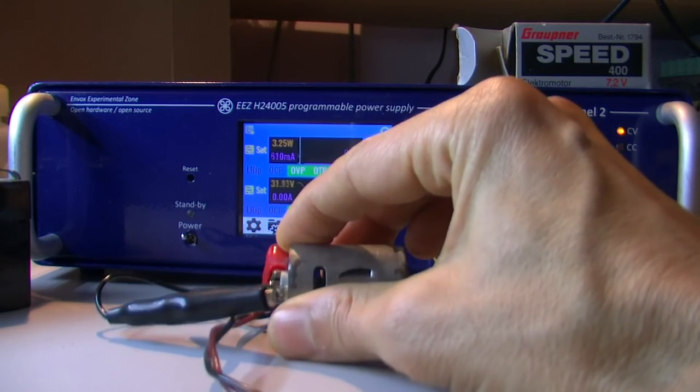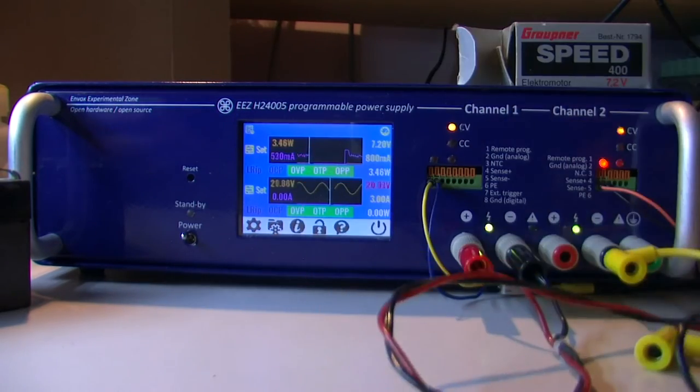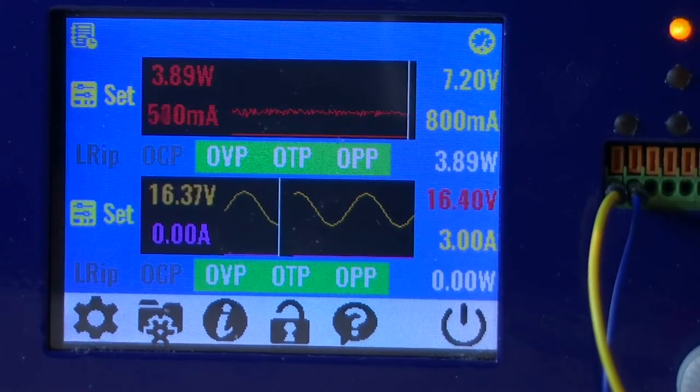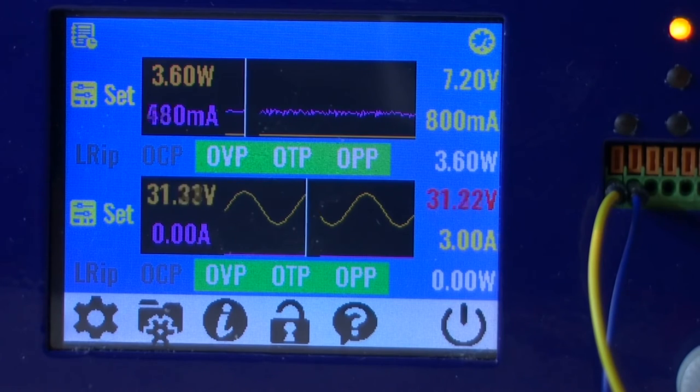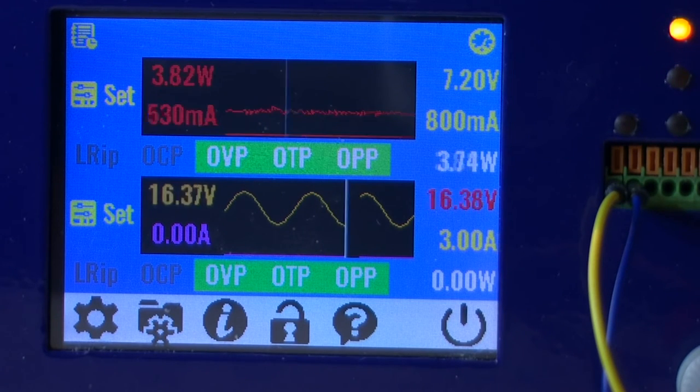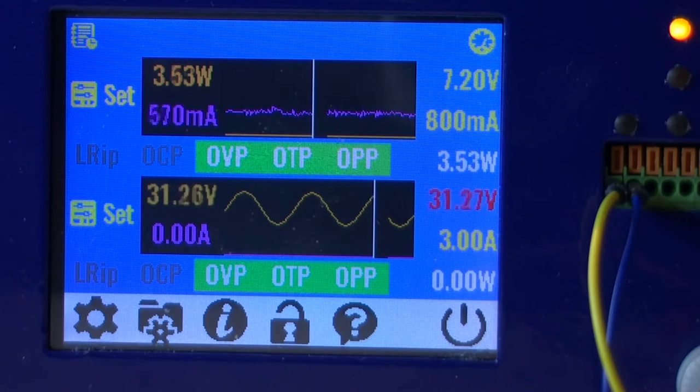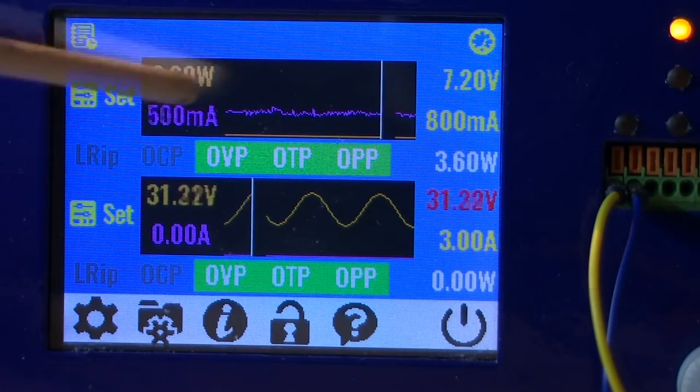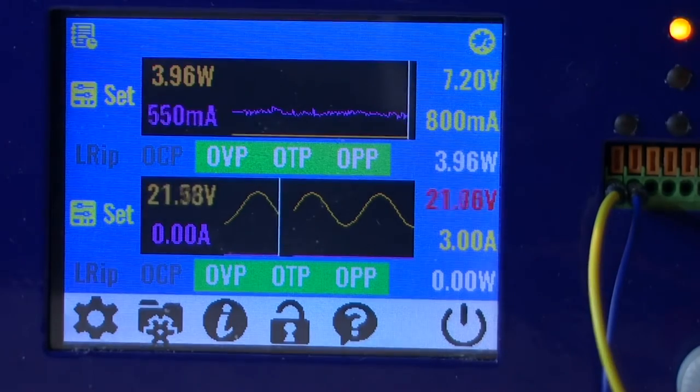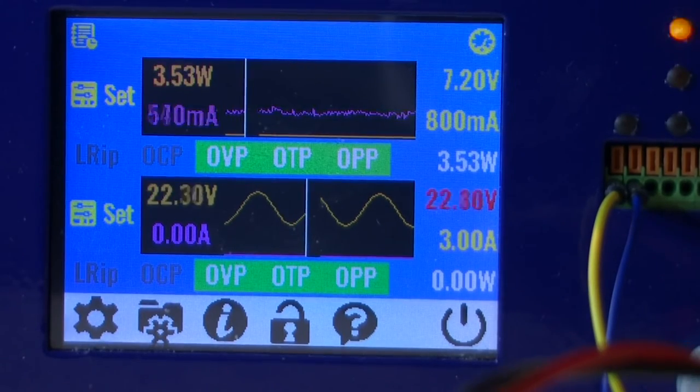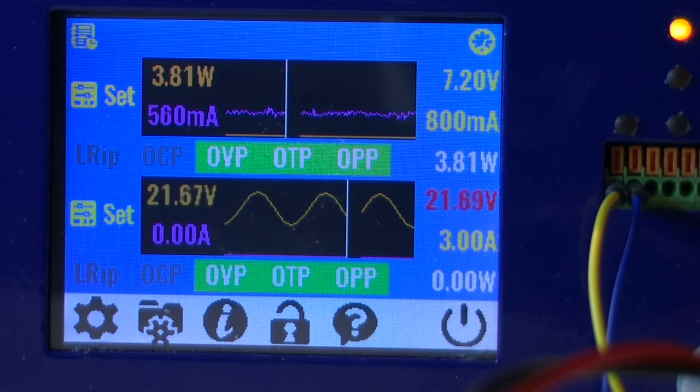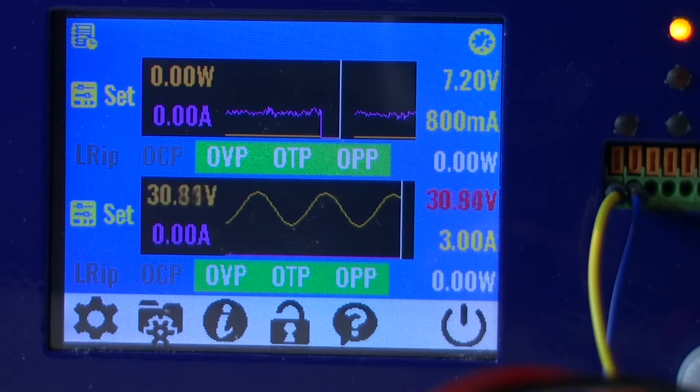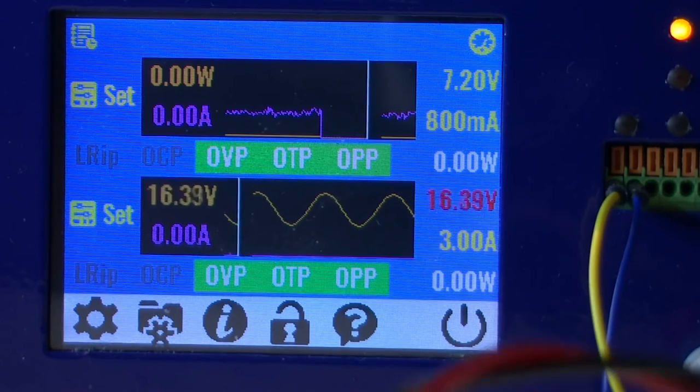So now it's working and we can see how current is not constant. And that changes in red color means that channel enters unregulated mode of operation.